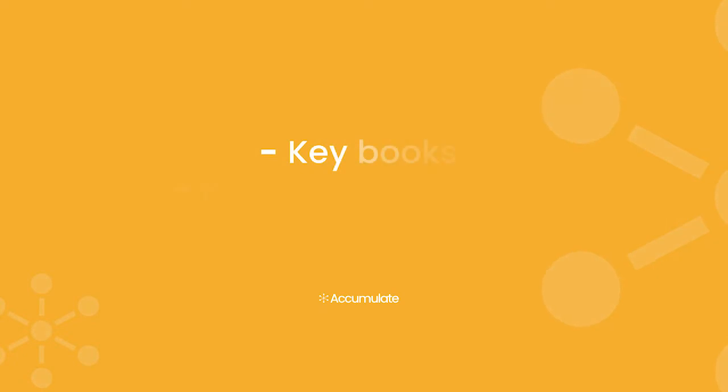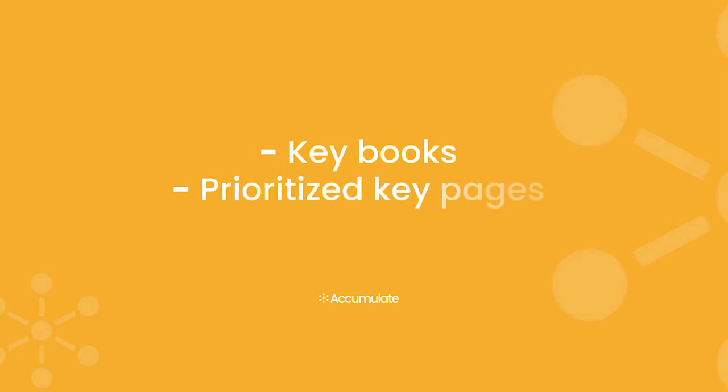One of the biggest differentiators between Accumulate and other blockchain protocols is the ability to manage your security over time without having to expose your private keys or make a new account. This feature is made possible by Accumulate's unique hierarchy of keys, which includes keybooks, prioritized keypages that are contained within keybooks, and either keys or URLs that are contained within keypages.